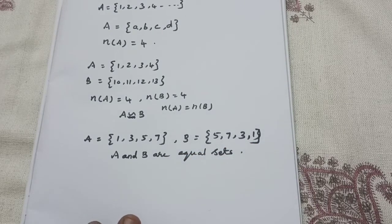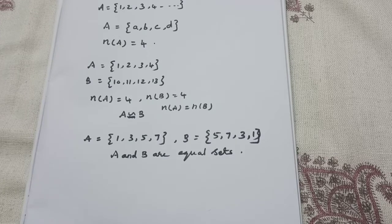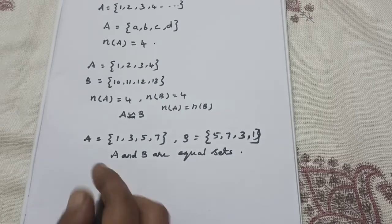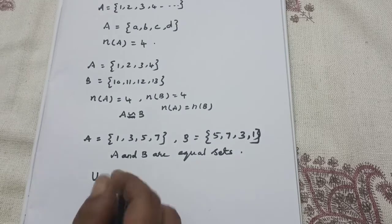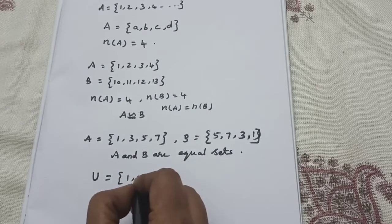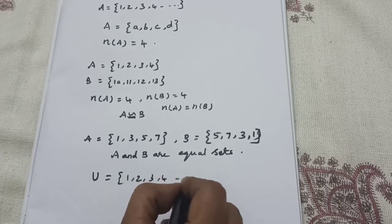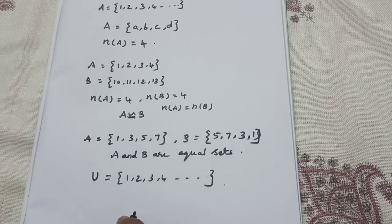Next: universal set. A universal set is a set containing all the elements of all sets under consideration, and it is usually denoted by U. For example, U = set of all natural numbers {1, 2, 3, 4, ...}. All elements will come in it. That is called a universal set.